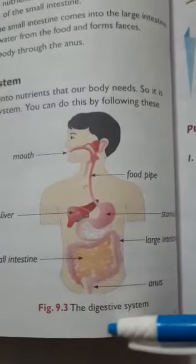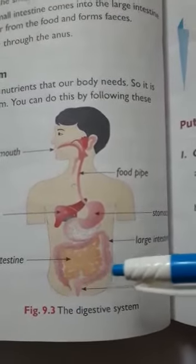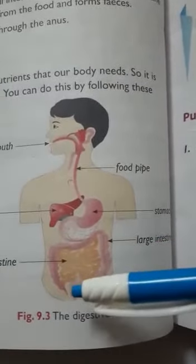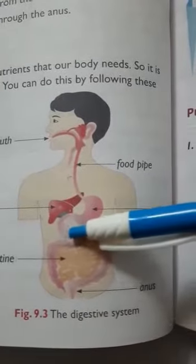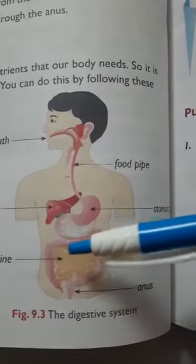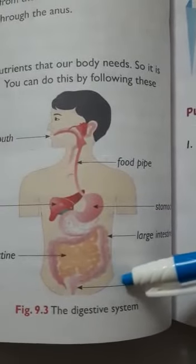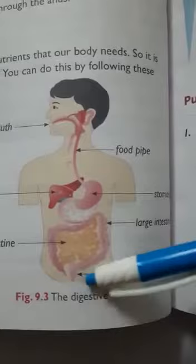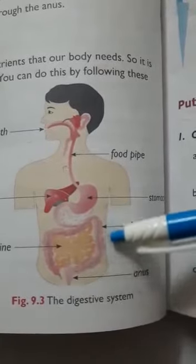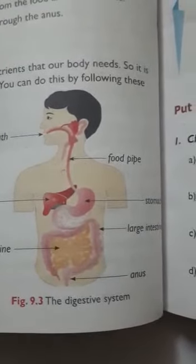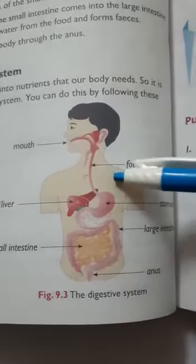The function of the large intestine: not all the food we eat is absorbed and digested. Some waste material is left out after completion of digestion. The undigested food from the small intestine comes into the large intestine, which absorbs water from it and forms feces. The feces — the waste material left after digestion — is released out of the body through the anus.